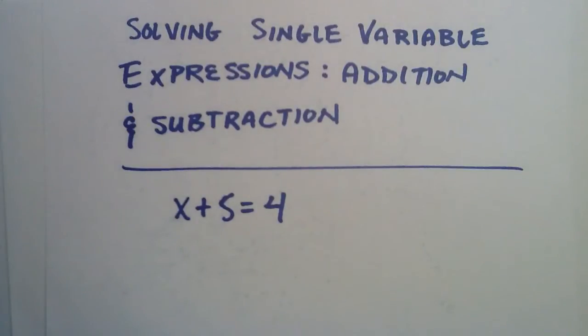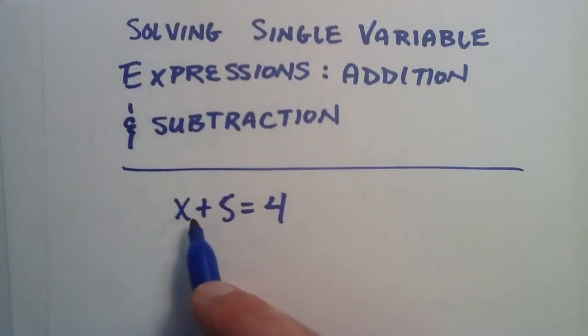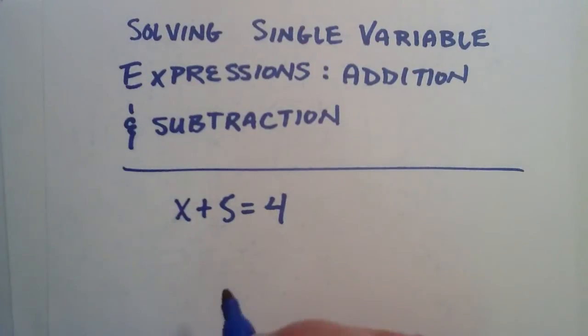x plus 5 equals 4, and our variable is x. And for starters, a good way to think about variables in single variable expressions is a variable can change, has a different value depending on what equation it's in. So, let's go ahead and take a look at this a little bit deeper.